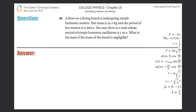Problem number 18: a diver on a diving board is undergoing simple harmonic motion. Her mass is 55 kilograms and the period of her motion is 0.8 seconds. The next diver is male whose period of simple harmonic oscillation is 1.05 seconds. What is his mass if the mass of the board is negligible? Basically, they're telling us three things: simple harmonic motion, mass, and period.